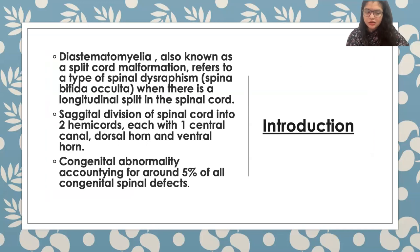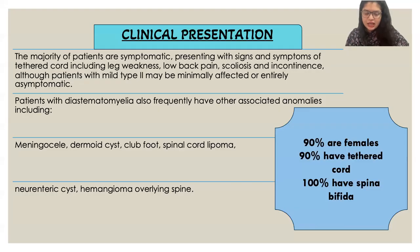Diastematomyelia, also known as split cord malformation, refers to a type of spinal dysraphism — spina bifida occulta type — where there is a longitudinal split in the spinal cord and sagittal division into two hemichords, each with one central canal, dorsal horn, and ventral horn. It accounts for around five percent of all congenital spinal defects. The majority of patients are symptomatic, presenting with signs and symptoms of tethered cord, including leg weakness, low back pain, scoliosis, and incontinence.